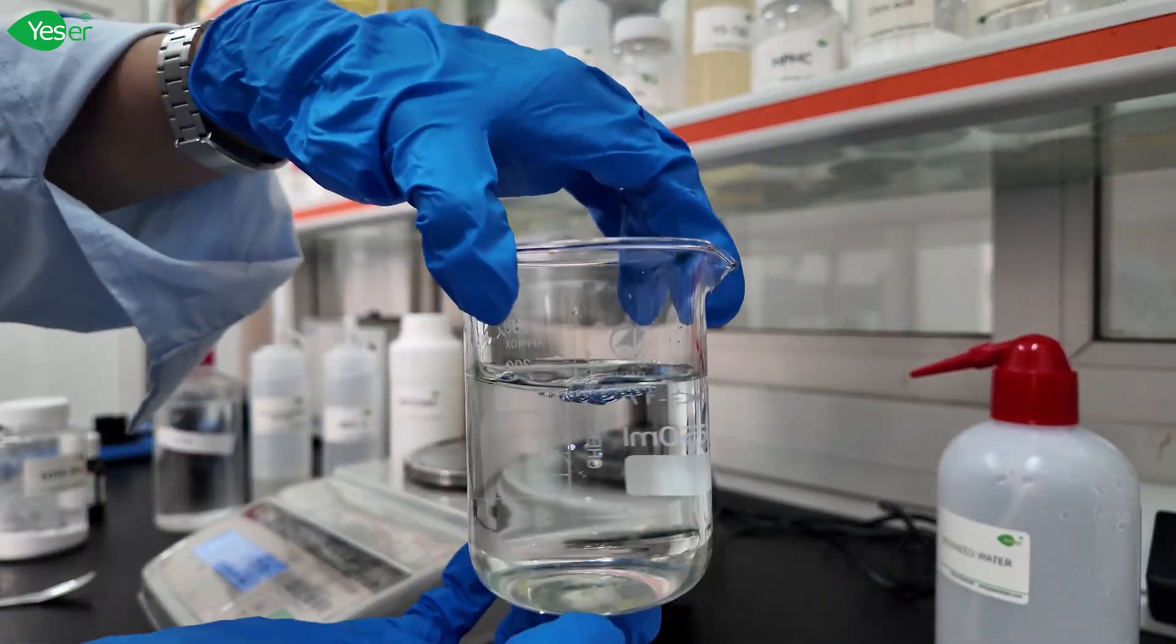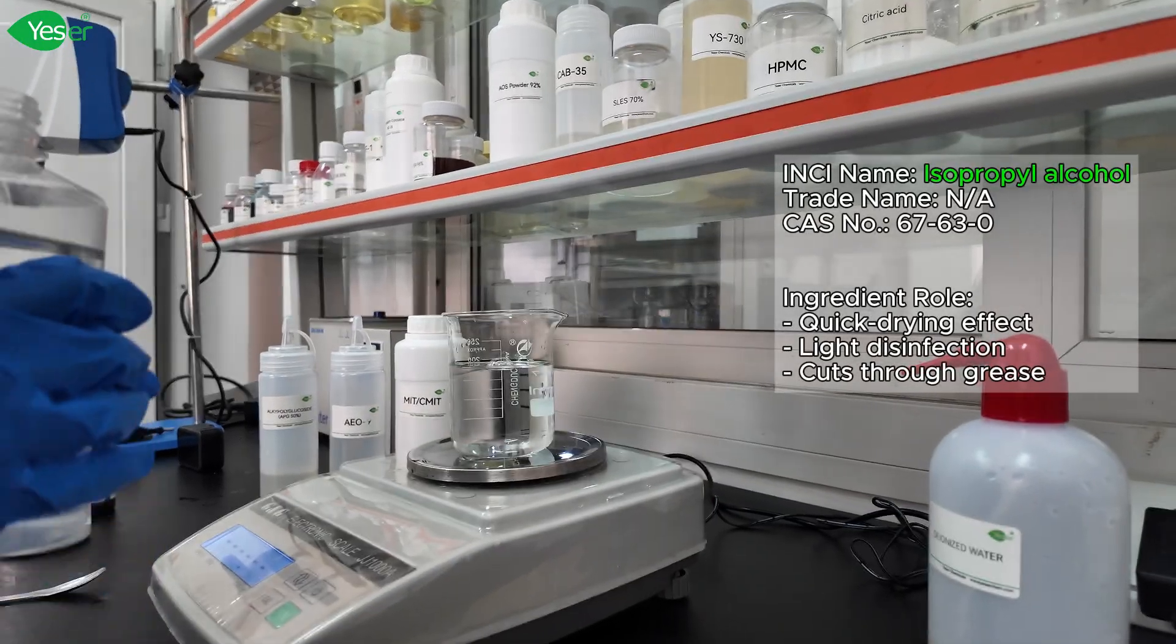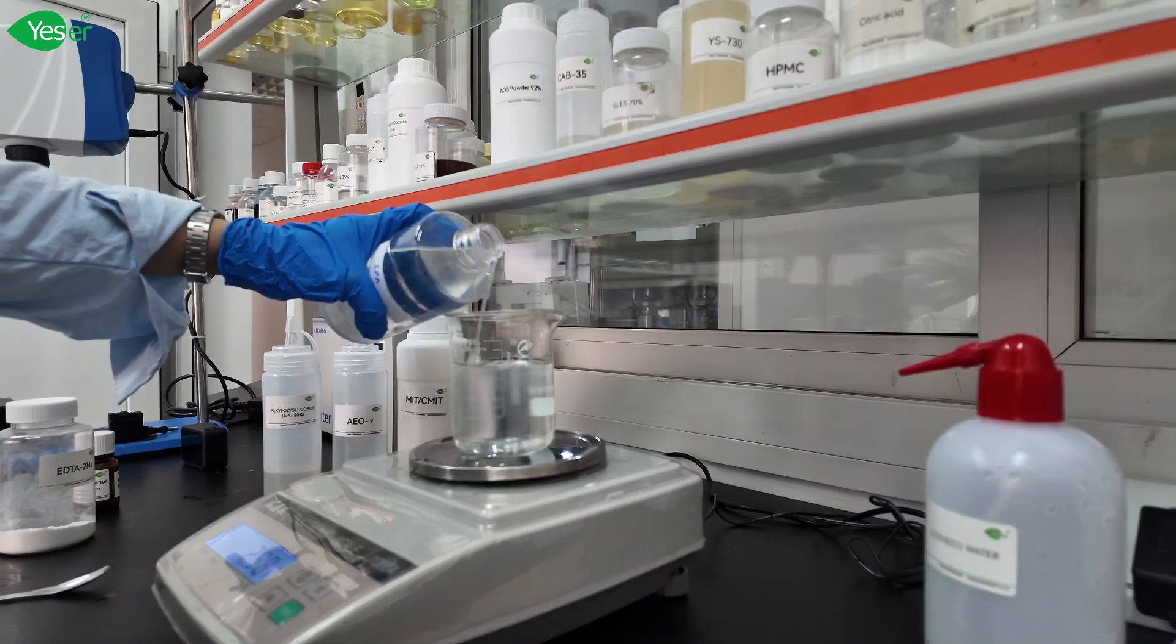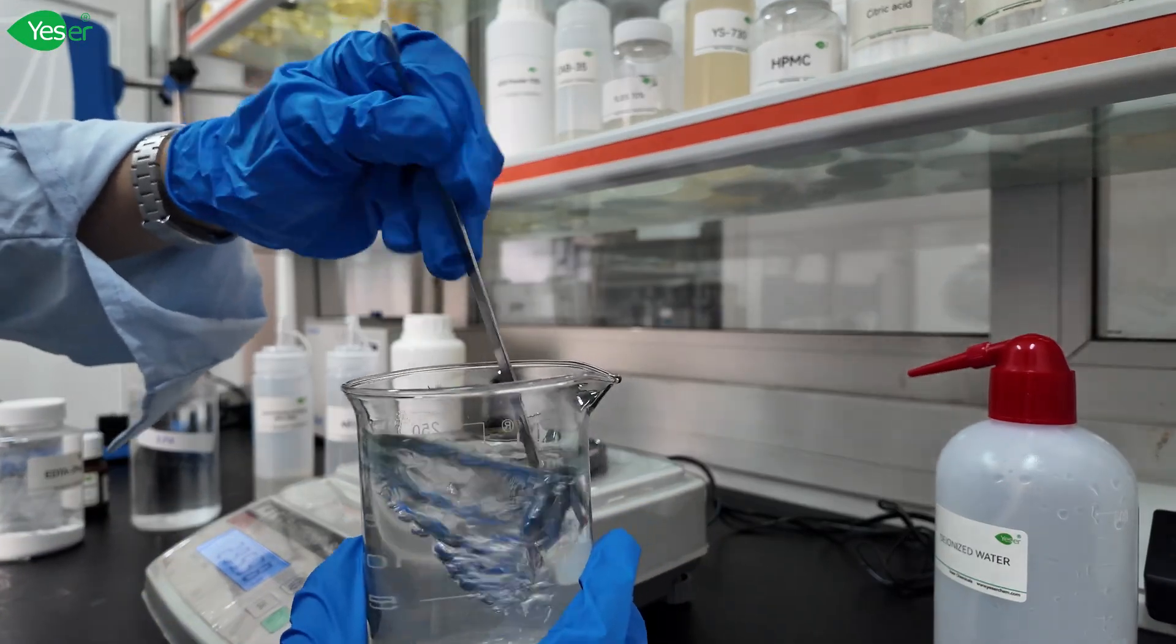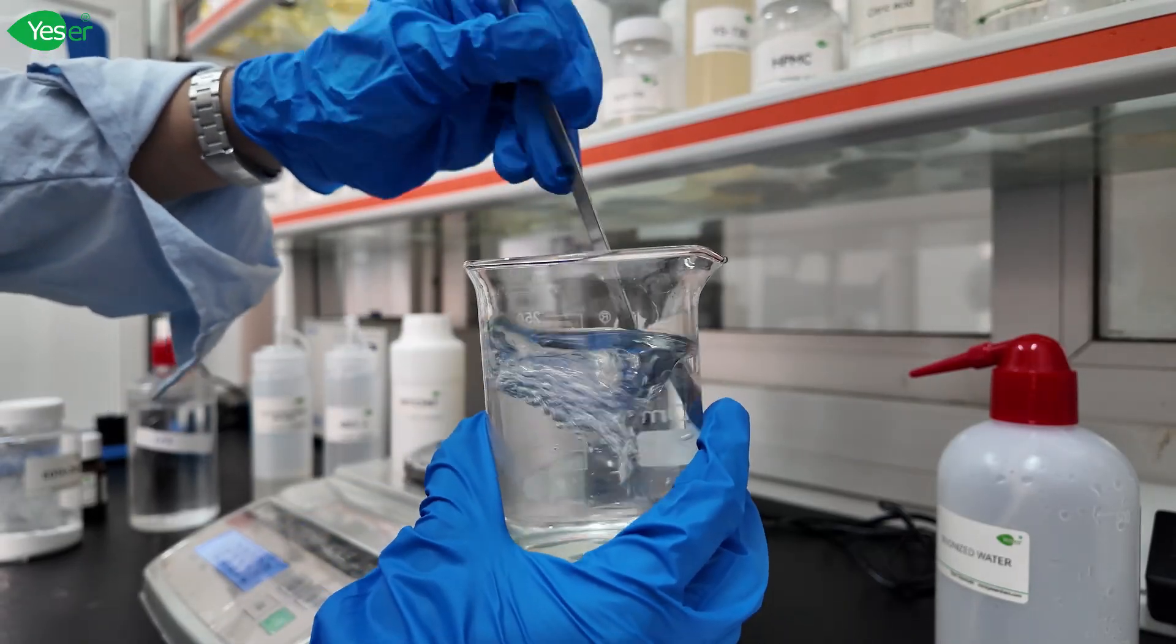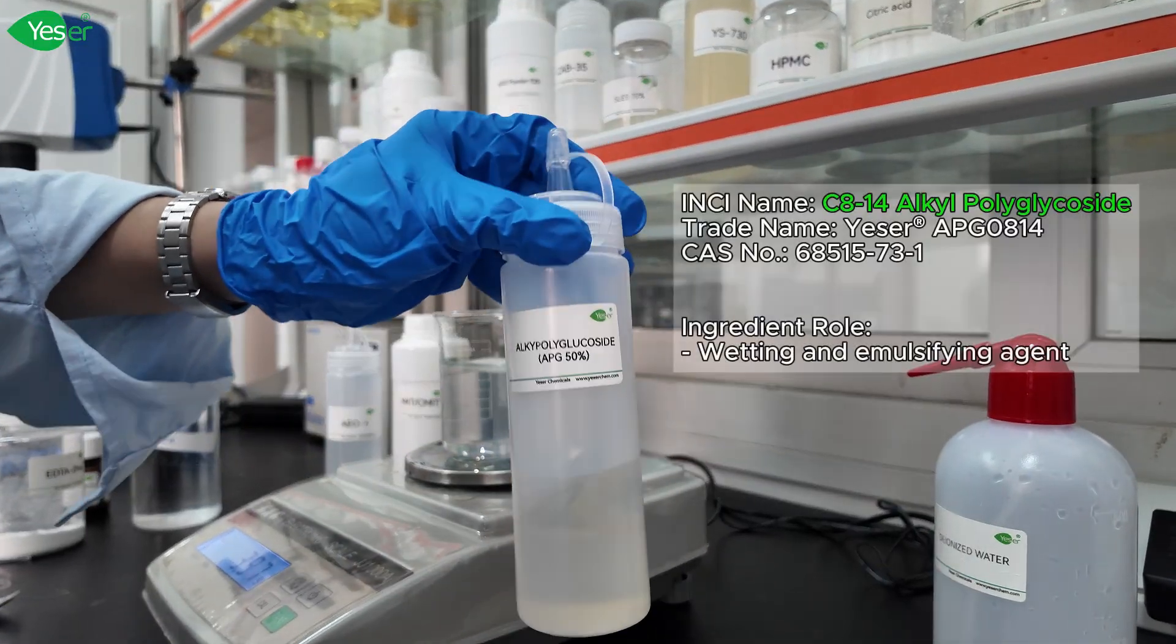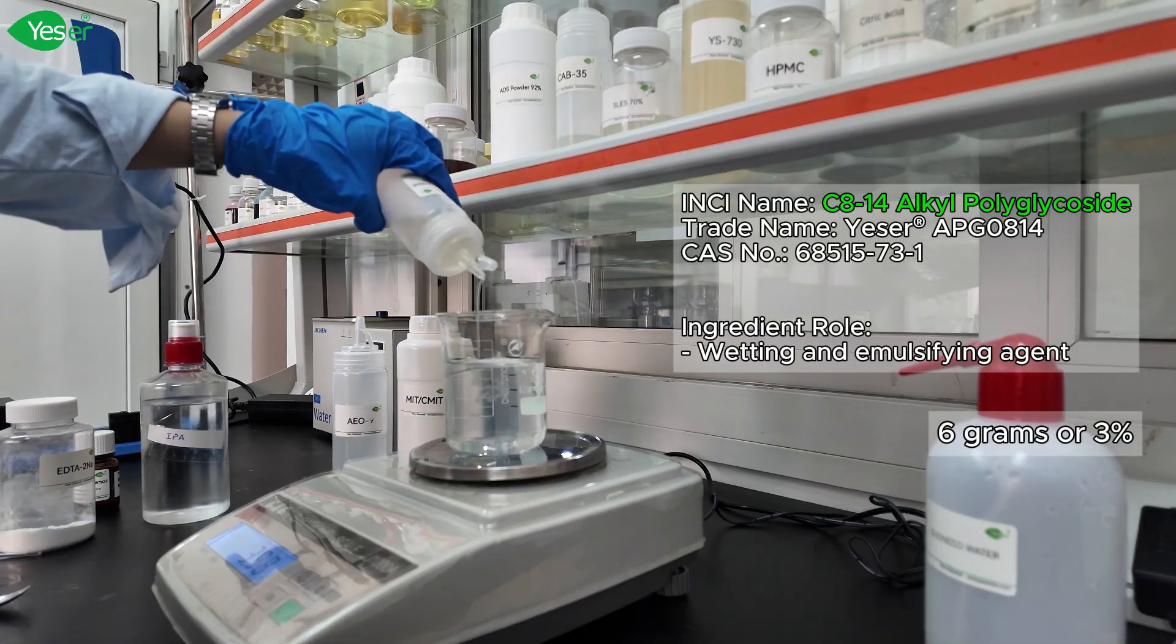Next let's add our solvent which is IPA. We will be needing 2 percent of this or 4 grams. Then let's mix again. Okay next our surfactants, let's add APG. Let's add 3 percent or 6 grams.